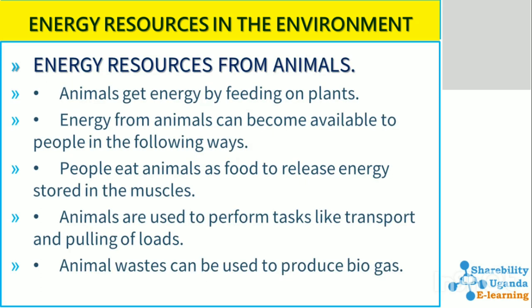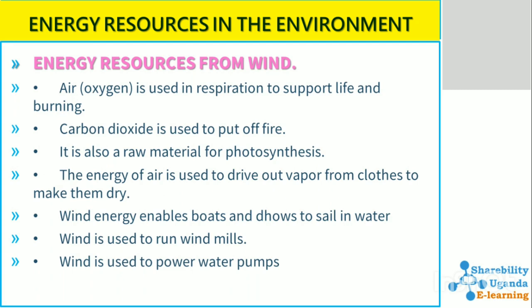Energy resources from animals: animals get energy by feeding on plants, as described in the food chain. Energy from animals becomes available to people in the following ways: when we eat animals as food they release energy stored in their muscles; animals are also used to perform tasks like transport and pulling loads; and animal wastes can be used to produce biogas.